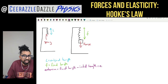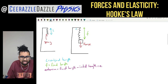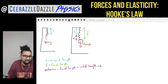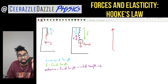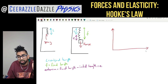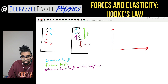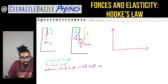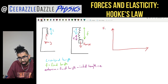I can add this to the diagram to make it easier. The original length is here, and the extension e is whatever extra length the spring has stretched to. Now we're going to plot a graph of the results, keeping increasing the force at the end of the spring.